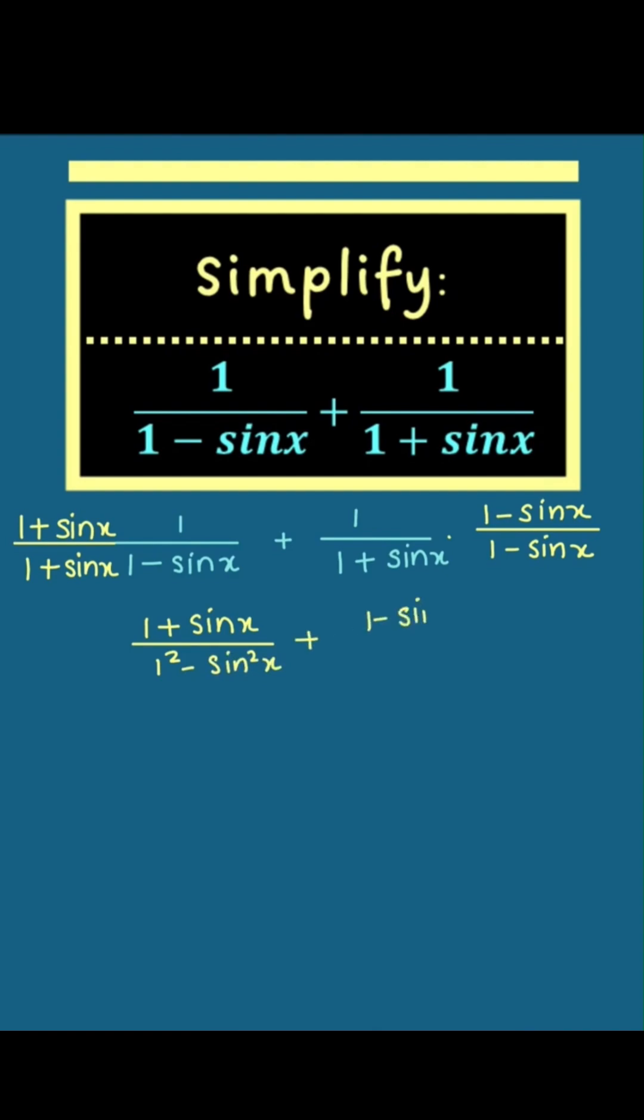We are now going to use the identity sin squared x plus cosine squared x equal to 1 to write 1 minus sin squared x as cosine squared x.